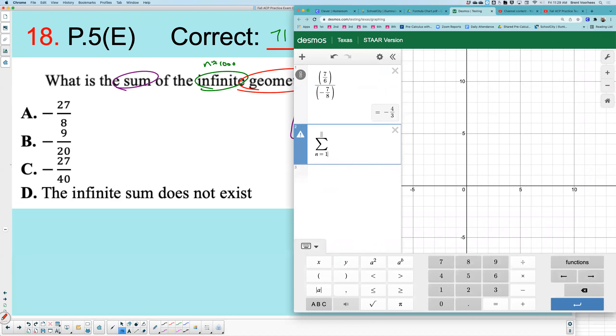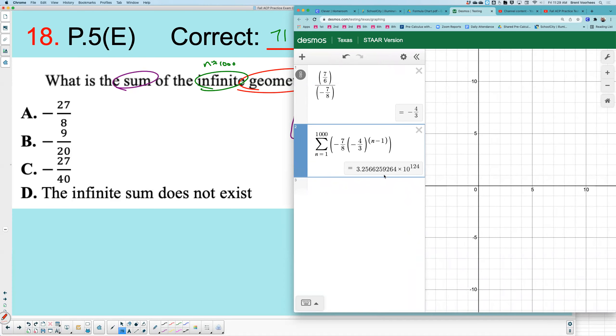So sum, N equals 1 to 1,000. Our first term we had was negative 7 divided by 8 times the ratio we got, negative 4 thirds. And all this was raised to the power of N minus 1. So I'll put that in parentheses, N minus 1. And that's right there, the sum.